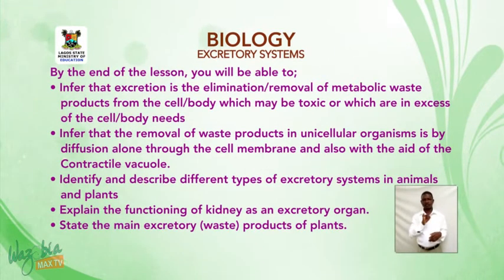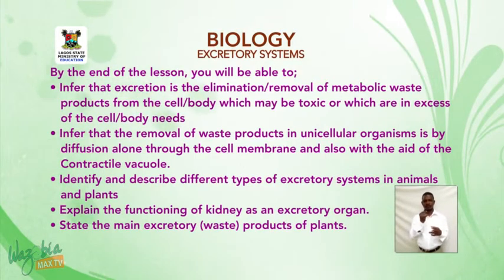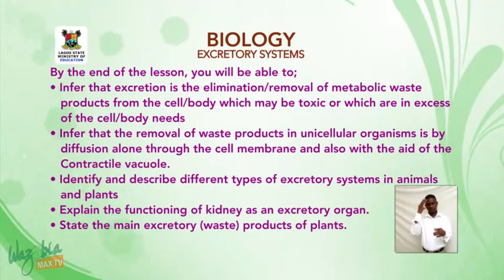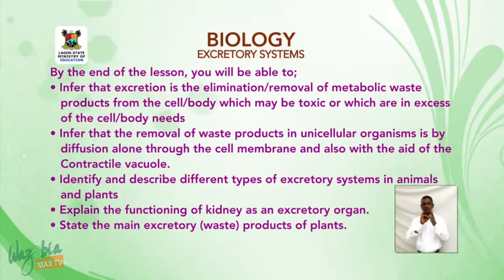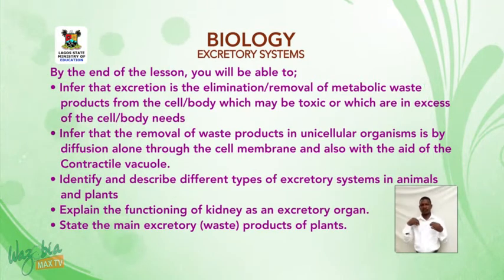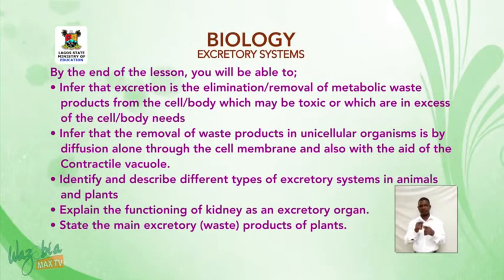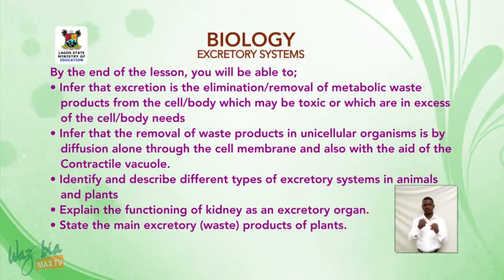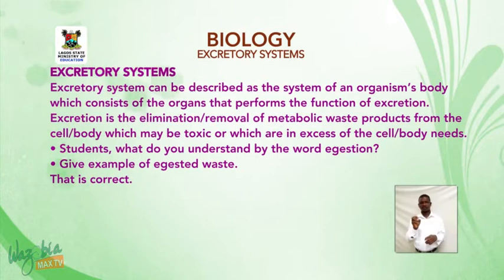Infer that the removal of waste products in unicellular organisms is by diffusion alone through the cell membrane, and also with the aid of the contractile vacuole; identify and describe different types of excretory systems in animals and plants; explain the functioning of the kidney as an excretory organ; state the main excretory waste products of plants.